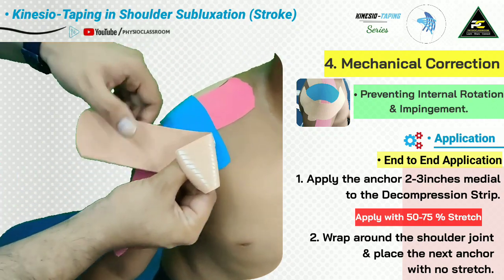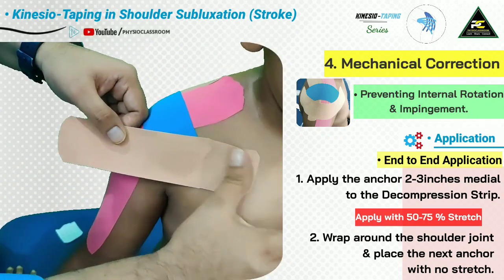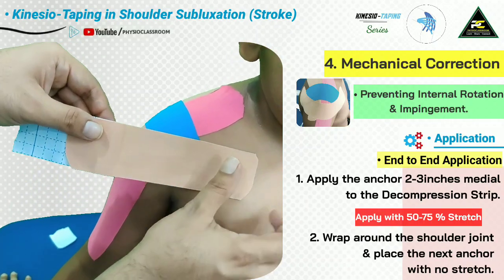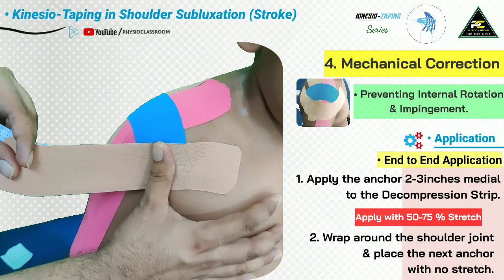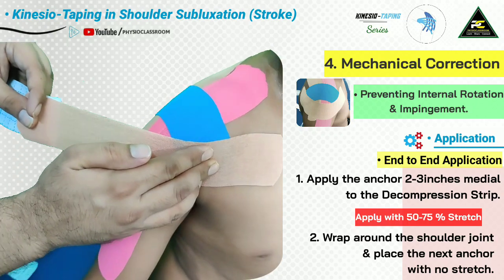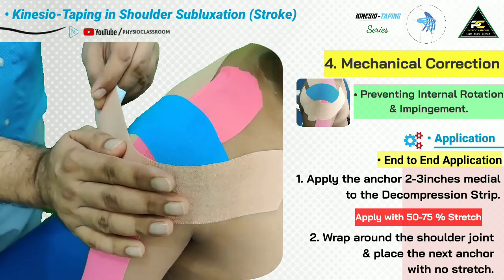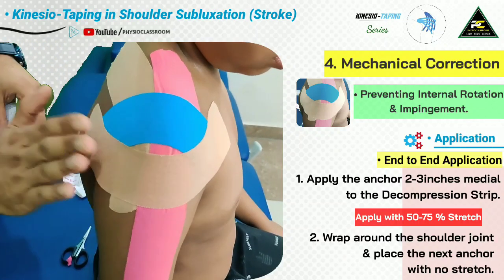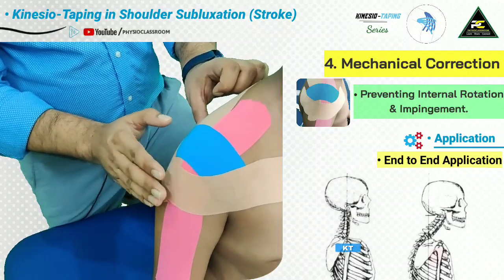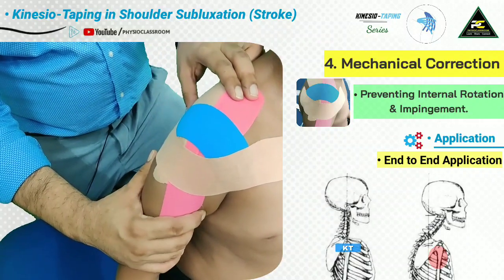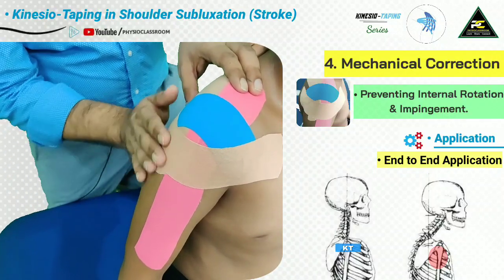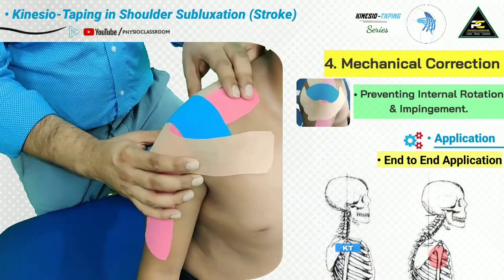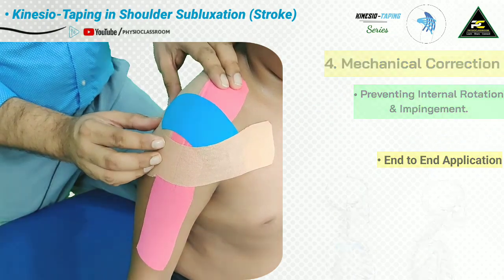Rub the anchor, then remove the paper backing, leaving some for the other side anchor. With pressure, move toward the humeral head. Once at the humeral head, apply tension of around 50 to 75 percent, then wrap around the shoulder joint and apply the posterior anchor with no stretch. Whenever there is abnormal internal rotation of the humeral head — the most common cause of impingement — the tension in this tape increases, sending a stimulus to the brain to correct the shoulder position back to where the tension becomes less.